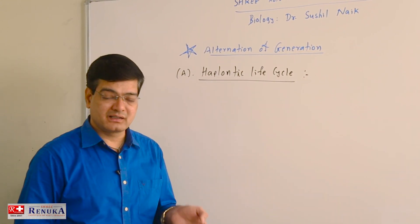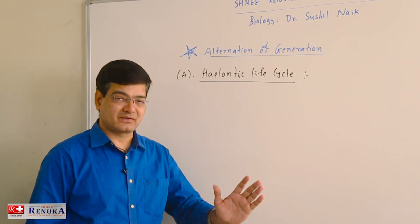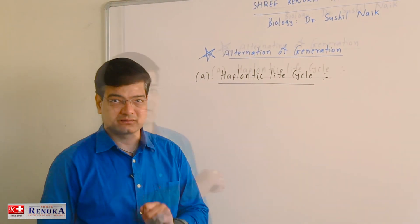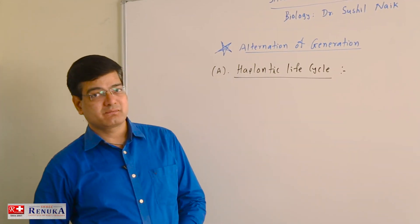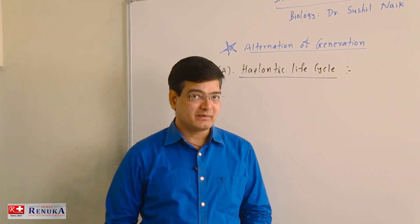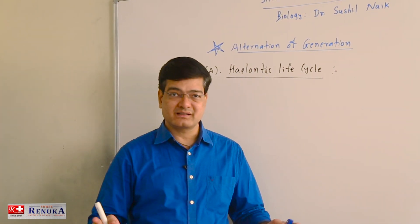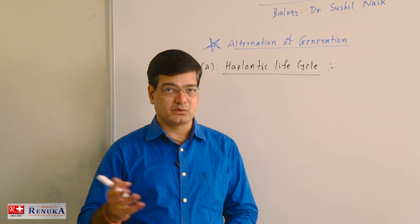Whenever we use this word haplontic life cycle, it clearly indicates that the main plant body must be haploid. The haplontic life cycle is found in algae as well as some thallophyte plant bodies. In the case of thallophytes, only the thallus is present in the plant body, as we know very well.